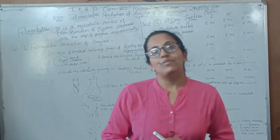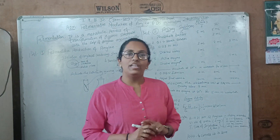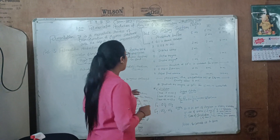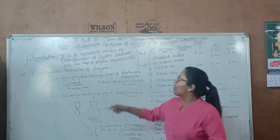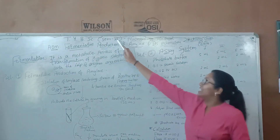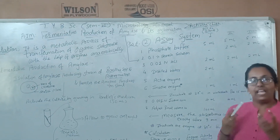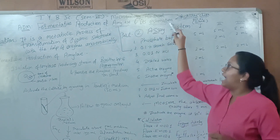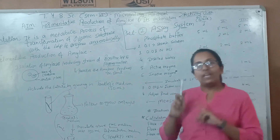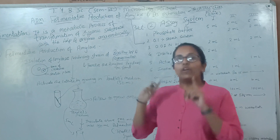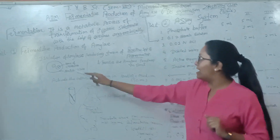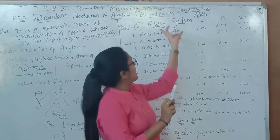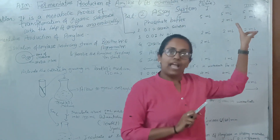Good afternoon. I am Dr. Smeeta Parikh, Faculty of Microbiology at Manali Education Society Science College. Today we are going to learn the practical from TY BFC Standard 6 Microbiology Practical. The aim of the practical is fermentative production of amylase and its activation. This practical is going to be divided into two different parts: the first part is the fermentative production of amylase, whereas the second part is estimation of enzyme activity.